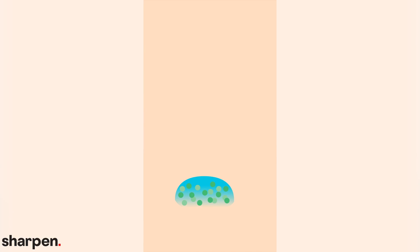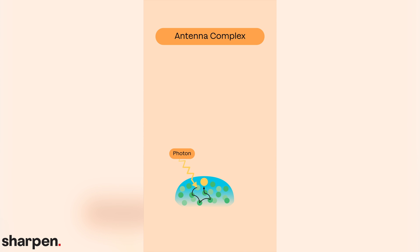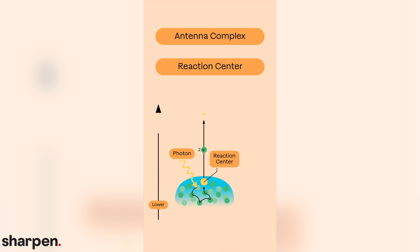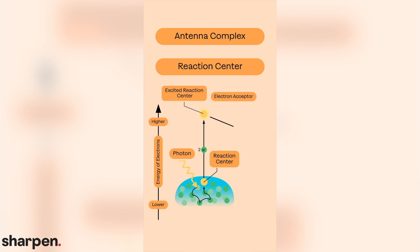Photosystems are complexes embedded in the thylakoid membrane of photosynthetic organisms. All photosystems have two structures. The antenna complex is where photons of light are captured by pigments. This energy is passed to a reaction center where it excites an electron that is then transferred to an acceptor along the membrane.